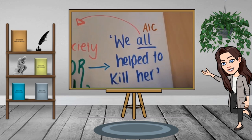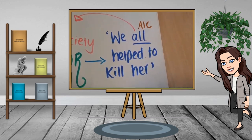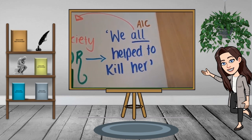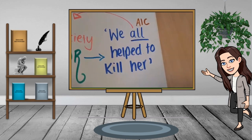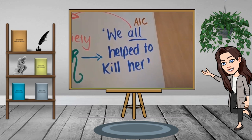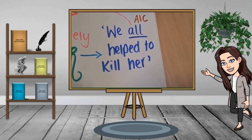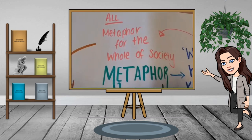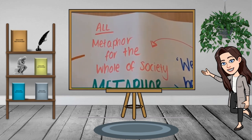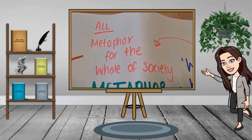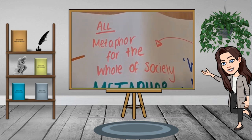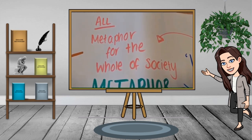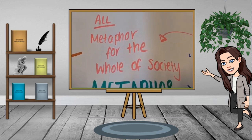Let's begin with An Inspector Calls. This line is from Eric, the youngest of the Birlings: 'We all help to kill her.' This is a metaphor because the word 'all' isn't just about the Birlings — 'all' is actually a metaphor for the whole of society and how the whole of society plays a role in the killing of Eva Smith, who is herself a metaphor for the entirety of the lower class.